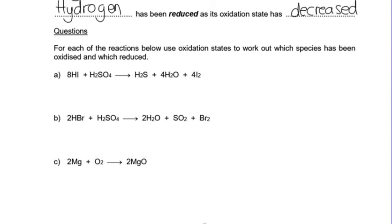Okay, so have a go. For each of these, work out which species, which is a word we use in chemistry when we don't want to say it's definitely an element or compound or ion, is being oxidized and which being reduced. So you need to put in oxidation states.